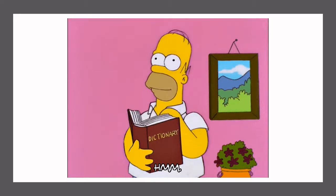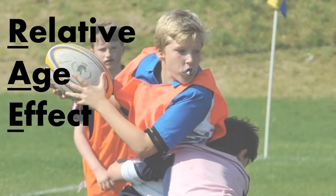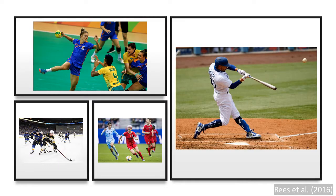Let's start with the definition, shall we? Rhys and colleagues have defined the relative age effect as a biased distribution of athletes' birth dates, with an over-representation of those born in the beginning of any given year and under-representation of those born at the end. Relative age effect is also known as RAE. It is often demonstrated in ice hockey, handball, soccer, and baseball.